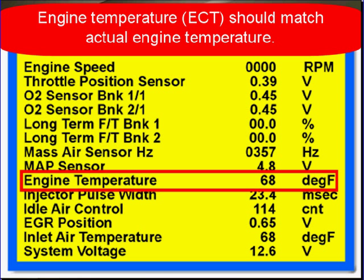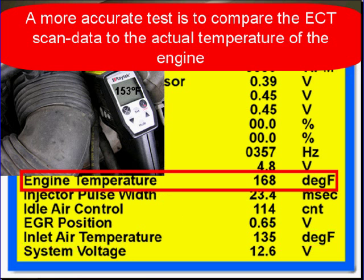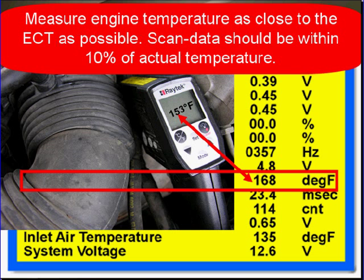Engine temperature should match actual engine temperature. You can use the ECT and compare it to the IAT if the engine has been off for several hours — it's a good indication that they're both working normally if they read the same temperature. A more accurate test is to compare the ECT scan data to the actual temperature of the engine, measured as close to the ECT sensor as possible. Scan data should be within 10% of the actual temperature.